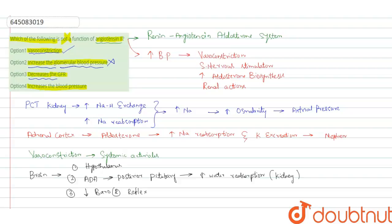Instead, it increases the glomerular filtration rate so that it can retain more water. And coming to option 4, it increases the blood pressure. Finally, it is also the function of angiotensin 2. So among the given options, option 2 is not the function of angiotensin 2. Thank you.